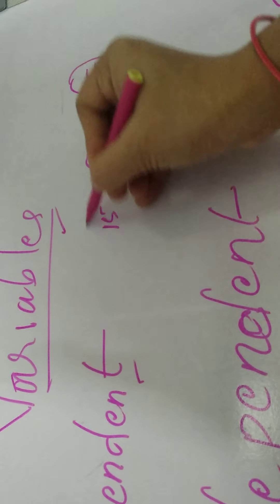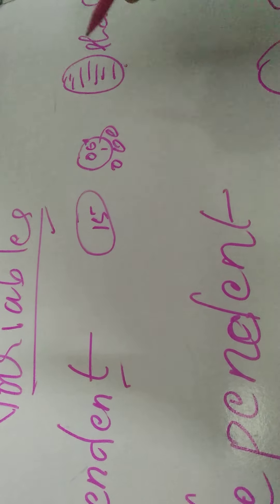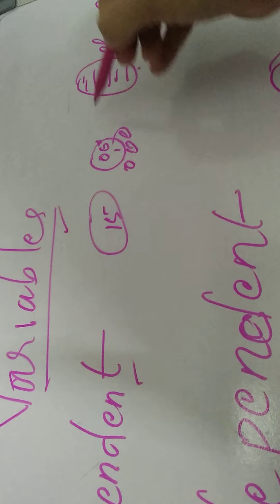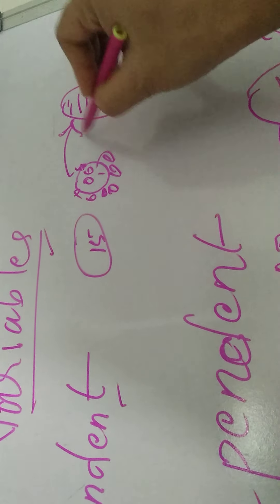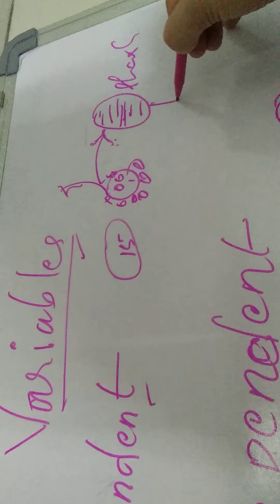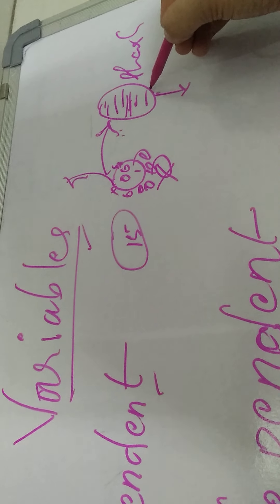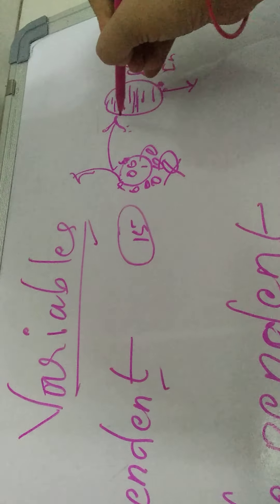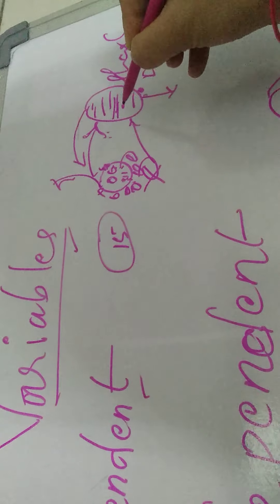There are 15 MSN students. I am Shashi, teaching them research. You people are dependent on my lecture — my lecture influences your knowledge. The more effectively I teach you, the more your knowledge will increase. So the one giving the lecture is the independent variable, affecting the dependent variables — your knowledge — which is dependent on the independent variable.